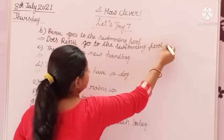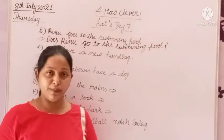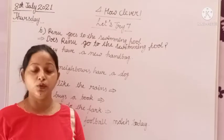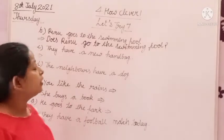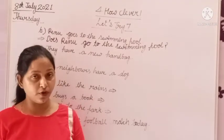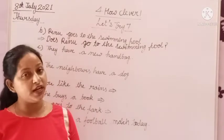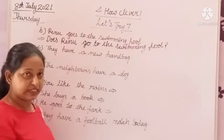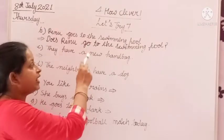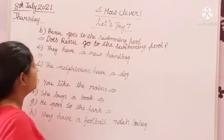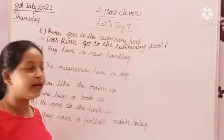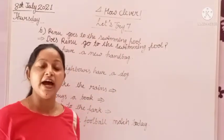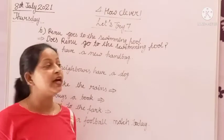Always remember: when we make asking sentences in simple present tense and we use do and does, we will have to use the first form of verb instead of the -es form. Here is the -es form in the statement. But when we make an interrogative sentence — an asking sentence — we will put the first form of verb. Does Renu go to the swimming pool? And after ending the sentence, we put a question mark, because an asking sentence always ends with a question mark.